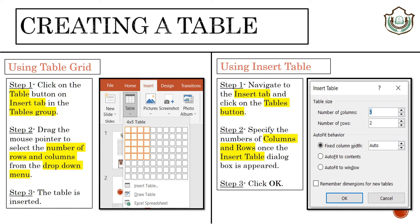In Word 2016 you can create a table by using table grid option and using insert table option. By using table grid option, just click on table on insert tab and then select the number of rows and columns from the drop down menu and the table is inserted.